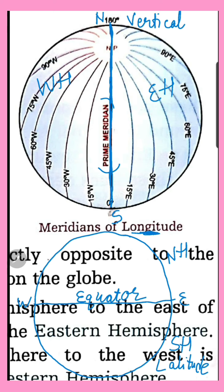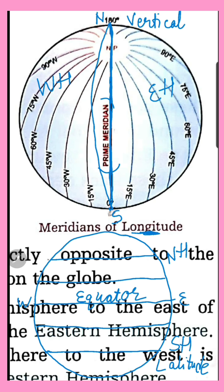Longitude lines are not parallel to each other — they meet at the North Pole and South Pole. Latitude lines are parallel to each other, meaning they never touch or meet. The difference between parallel latitude lines remains the same everywhere.